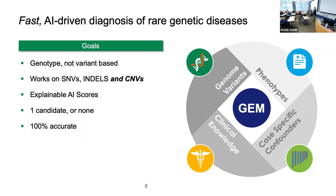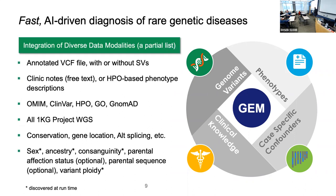That's the ideal goal — probably not fully achievable — but as I'll show, we've come surprisingly close, which says something about the power of AI on these data. To achieve those aims, GEM integrates a diverse set of data modalities as its knowledge base. The inputs are an annotated VCF file with or without structural variants, clinic notes as raw text, PDFs, or Word documents, and either HPO-based phenotype descriptions or physician opinions.